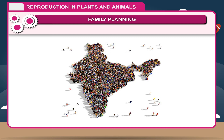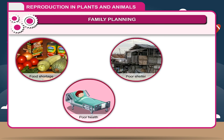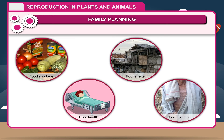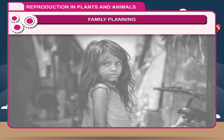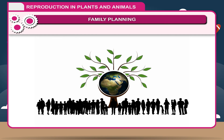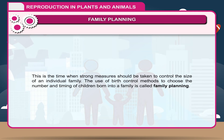Family Planning: Overpopulation is the biggest problem of India. This has created several problems such as food shortage, poor health, poor shelter, poor clothing, insufficient health schemes, and lack of educational facilities for poor people. If the population is controlled, many problems will be solved automatically. This can be done only through family planning — strong measures should be taken to control the size of an individual family. The use of birth control methods to choose the number and timing of children born into a family is called family planning.